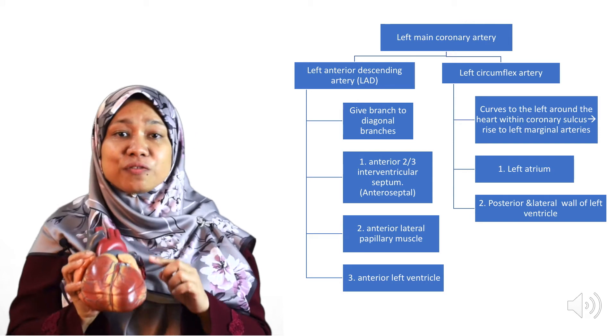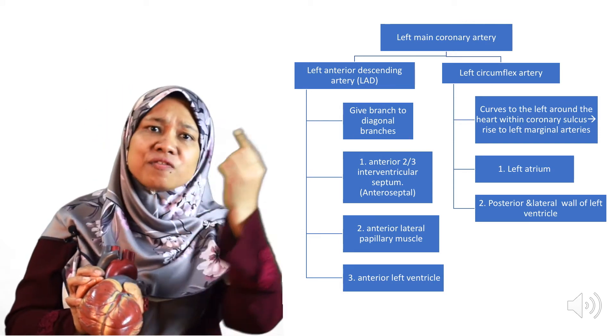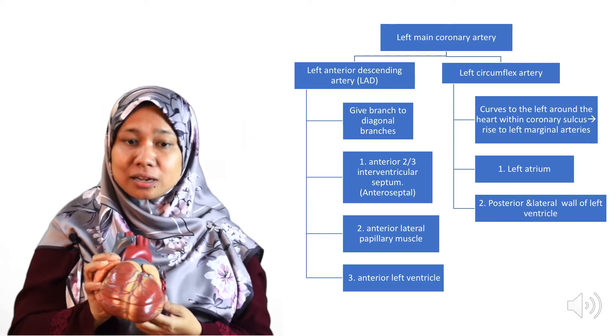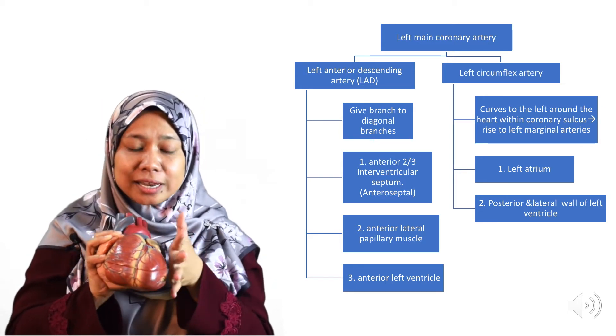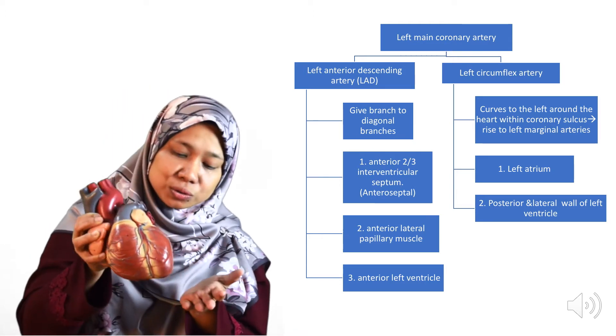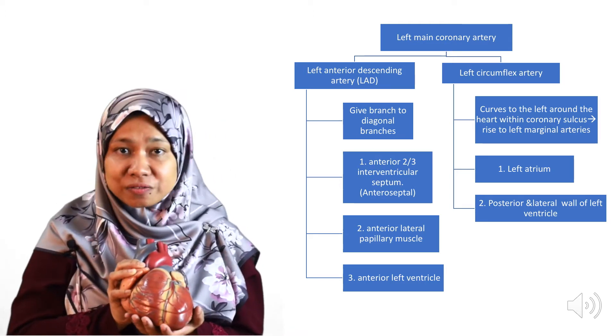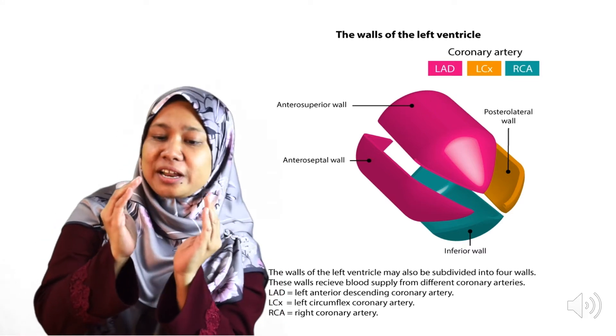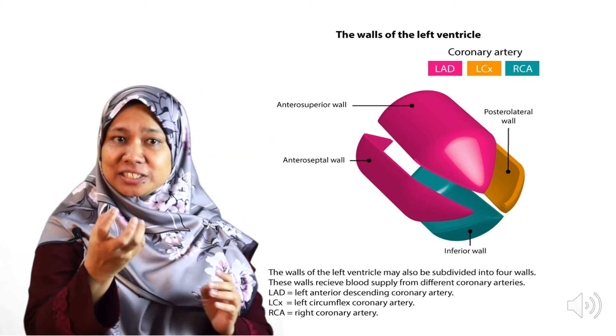The left circumflex artery travels backward to the posterior side of the heart, supplying the lateral part of the left ventricle and also the posterior part of the left ventricle. Sometimes the left circumflex artery will also supply the inferior part of the left ventricle. The left ventricle is shaped like a bullet — round with a pointed end, which is the apex.